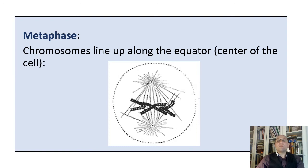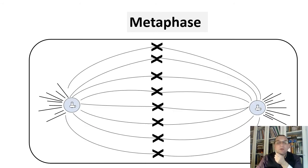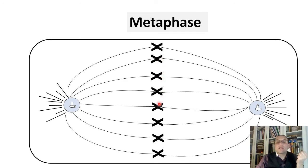In metaphase, chromosomes line up along the equator — the center of the cell. You can clearly see them right in the middle. The chromosomes are brought to a well-defined plane in the middle of the mitotic spindle, carried there by the microtubule spindle fibers attached to each chromosome at the specific site known as the spindle fiber attachment site, or centromere.